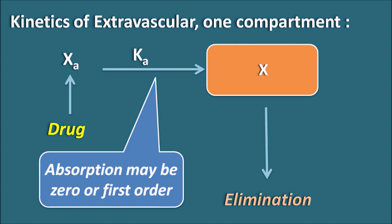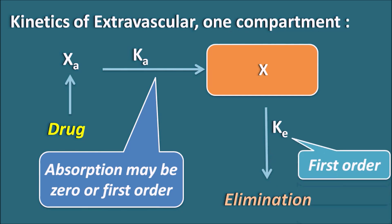Drug absorption may be either zero-order or first-order based on the route of administration. The elimination of the drug is influenced by the elimination rate constant. Under normal conditions, elimination always follows first-order kinetics. So in the extravascular one-compartment model, absorption may be zero-order or first-order, but elimination is always first-order.